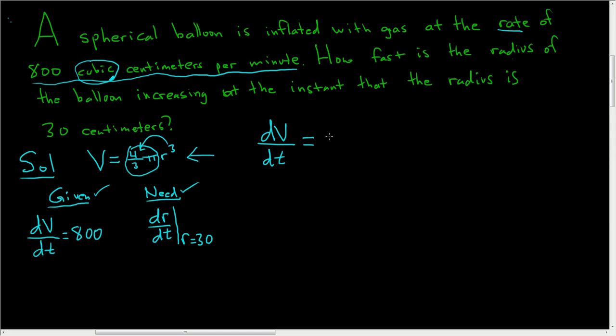so you get 3 times 4 thirds pi r squared times the derivative of the inside, which is r, so dr/dt. That's the chain rule, all right, that's just the chain rule. So these cancel, so we get dV/dt equals 4 pi r squared.